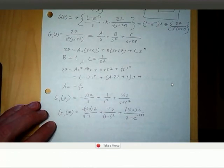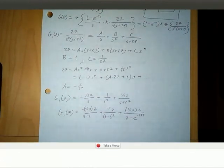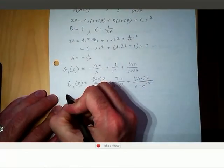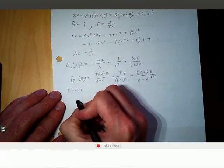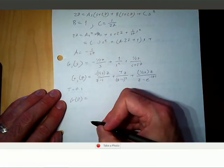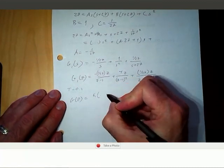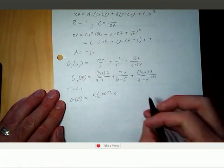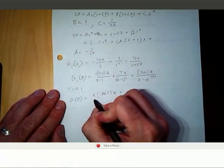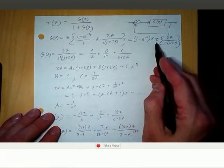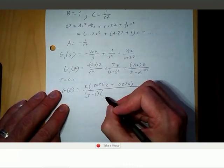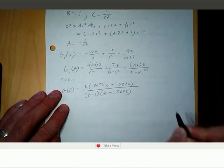Now we have g1 of z. Using our z-transform tables and substituting T equals 0.1, we get g of z equal to k times (0.0655z plus 0.0278) after distributing and finding a common denominator, which is (z minus 1) times (z minus 0.0672).